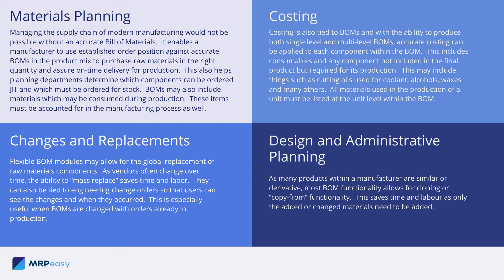This may include things such as cutting oils used for coolant, alcohols, waxes, and many others. All materials used in the production of a unit must be listed at the unit level within the bill of materials.